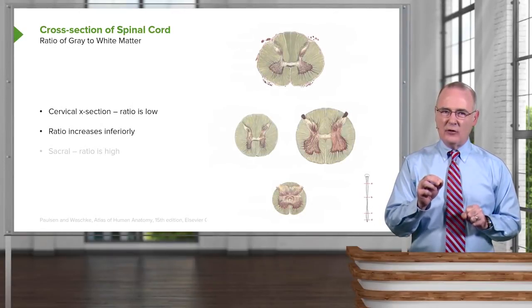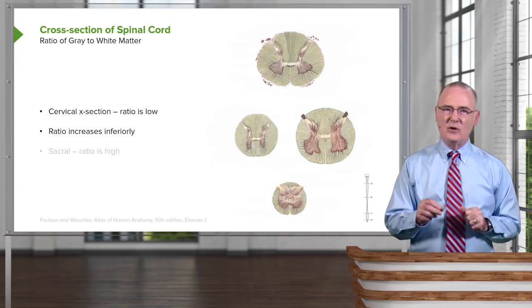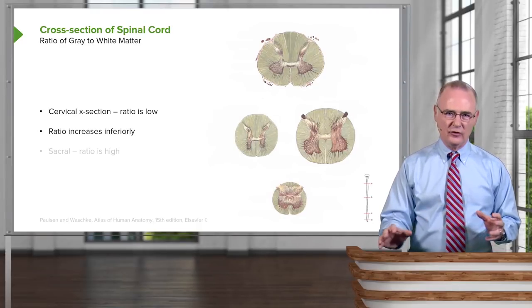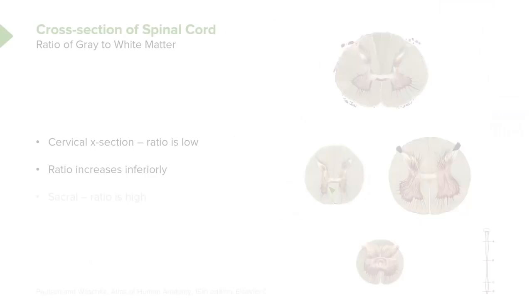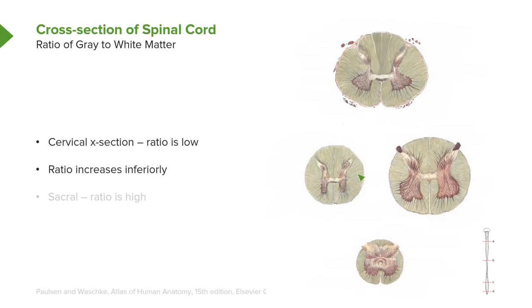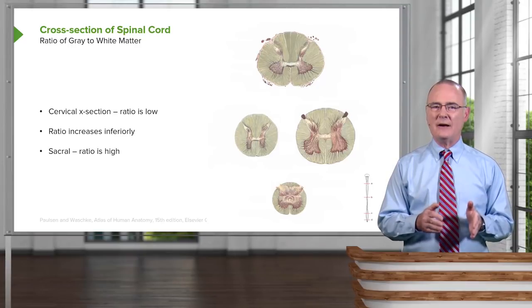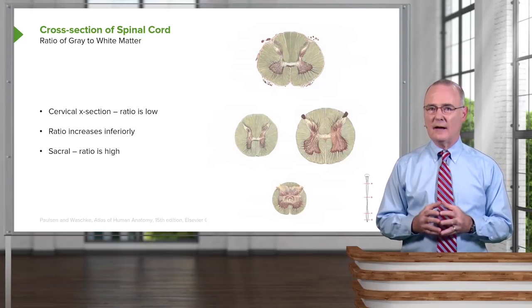The concept to remember is that the ratio of gray matter to white matter increases inferiorly. As you look at the thoracic area, you start to see a greater ratio of gray to white. In the lumbar area, an even greater ratio of gray matter to white matter. And when you get to the sacral area, you see a large area of gray matter and very little white matter — the ratio of gray matter to white matter is very, very high.